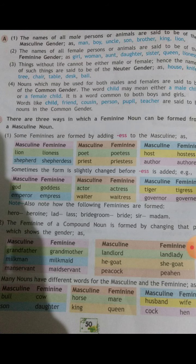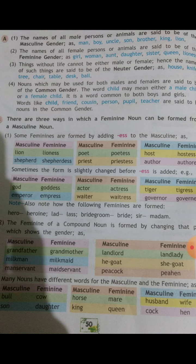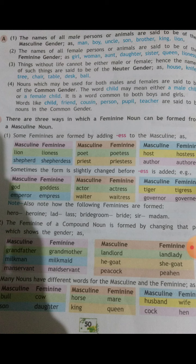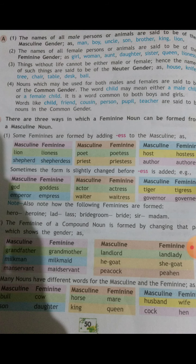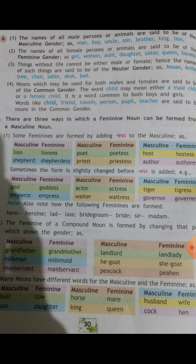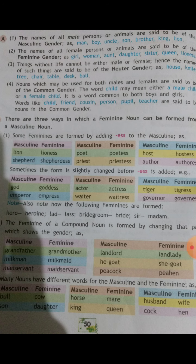The following are some examples of nouns in the common gender: parent, relation, friend, cousin, bird, dear, servant, teacher, child, baby, orphan, pupil, students, and person.